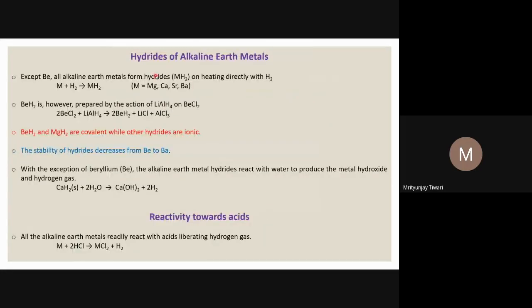Now let us look at the hydrides of alkaline earth metals. Hydrides are compounds with hydrogen. The alkaline earth metals are beryllium, magnesium, calcium, strontium, barium, and radium. We do not focus on radium because it is radioactive and its chemistry is not in our syllabus.